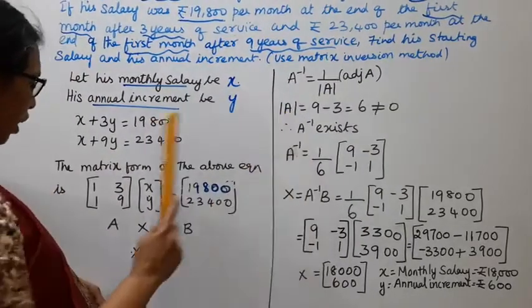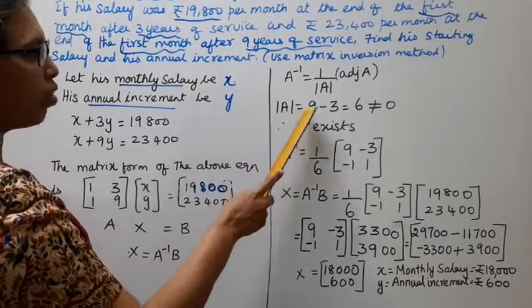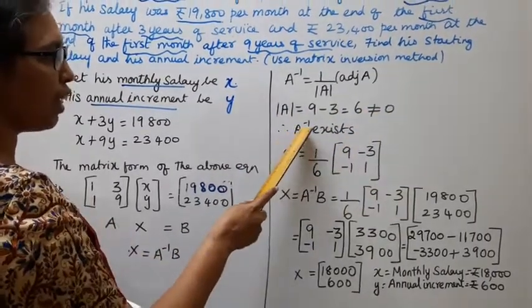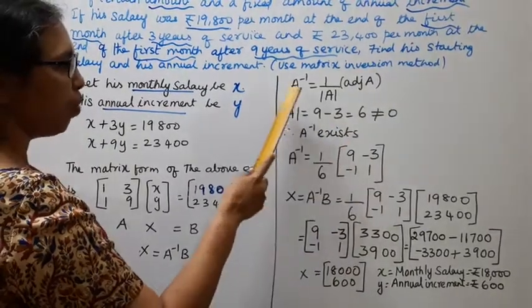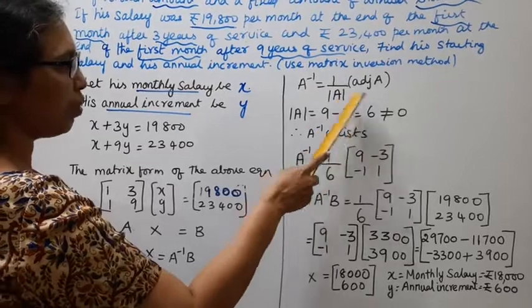Determinant A: 1 times 9 minus 3 times 1. Determinant A equals 9 minus 3 equals 6. 6 does not equal 0, therefore A inverse exists. A inverse equals 1 by 6.